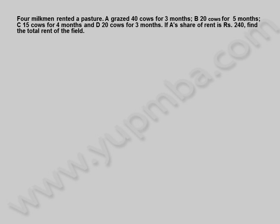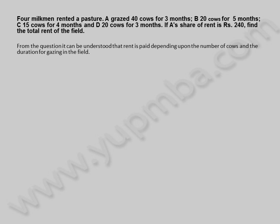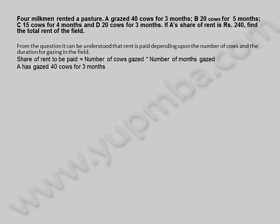Let us see another example. Four milkmen rented a pasture. A grazed 40 cows for three months, B 20 cows for five months, C 15 cows for four months, and D 20 cows for three months. If A's share of rent is 240 rupees, find the total rent of the field. From the question, it can be understood that rent is paid depending upon the number of cows and the duration for grazing in the field. Share of rent to be paid equals number of cows grazed multiplied by number of months grazed.